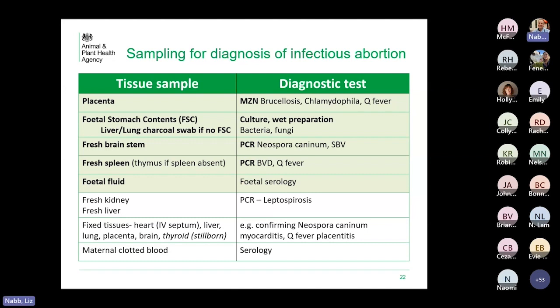Fetal fluid can be used for fetal serology, and we tend to keep some fresh tissues — kidney could be used for leptospirosis, although we don't routinely test for that. Fixed tissues can be used if we're unable to get a diagnosis. If the fetus is heavily autolyzed, it's not worth keeping these as they're not of any diagnostic use. Maternal clotted blood can be useful depending on the history — chat it over with your VIO if you're considering that, and obviously if they're vaccinated it won't be of much use.